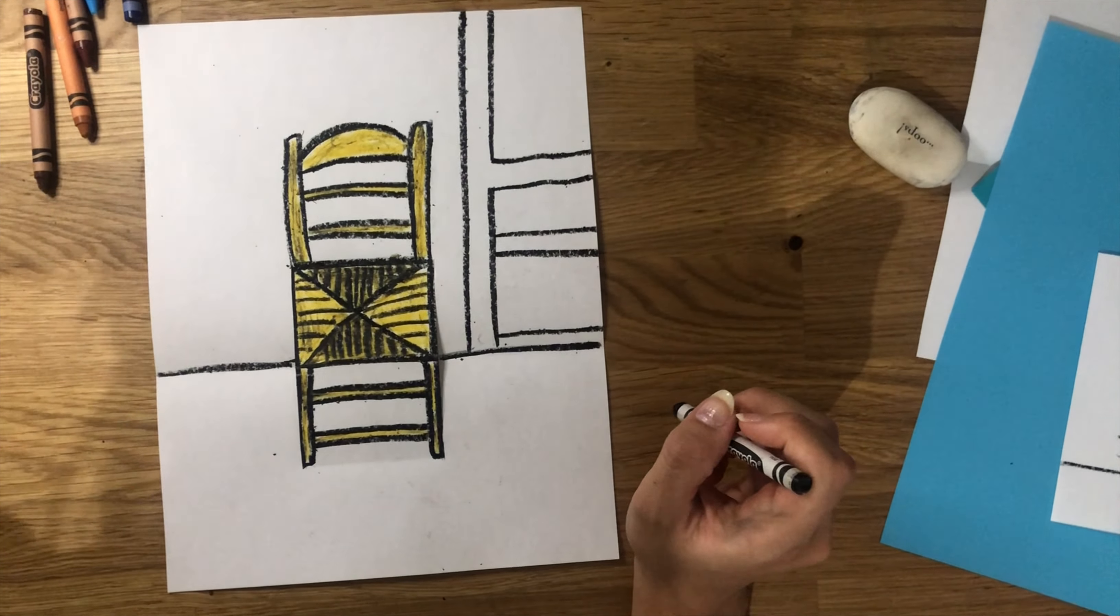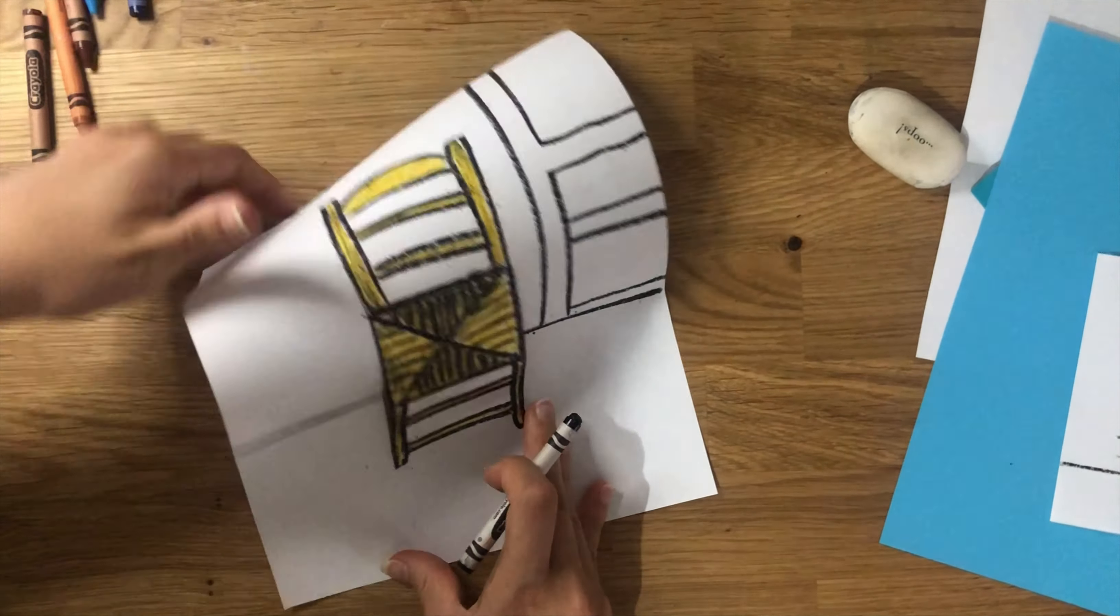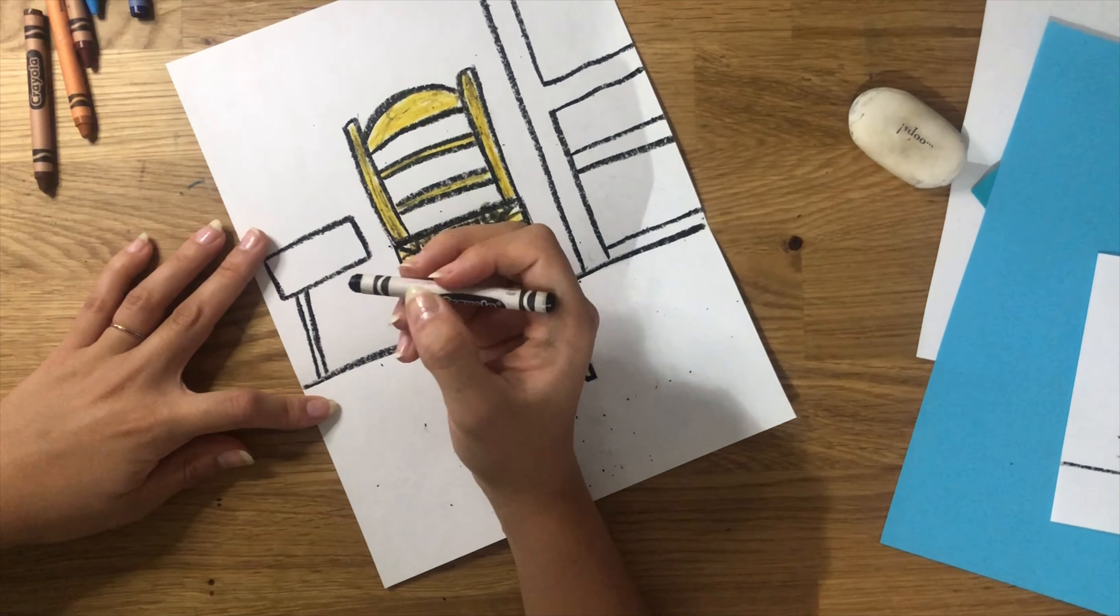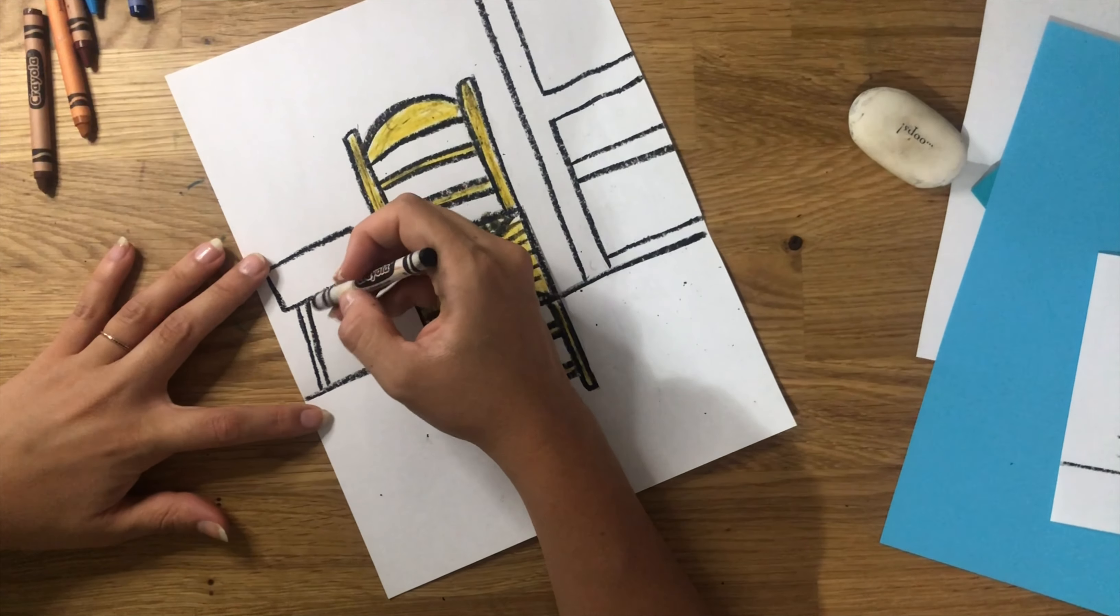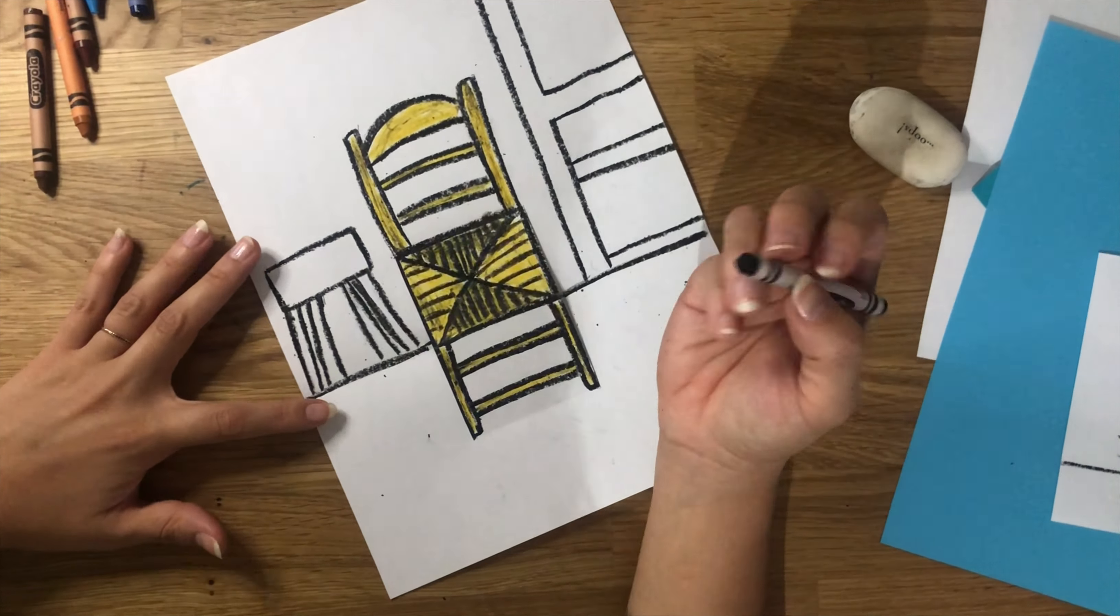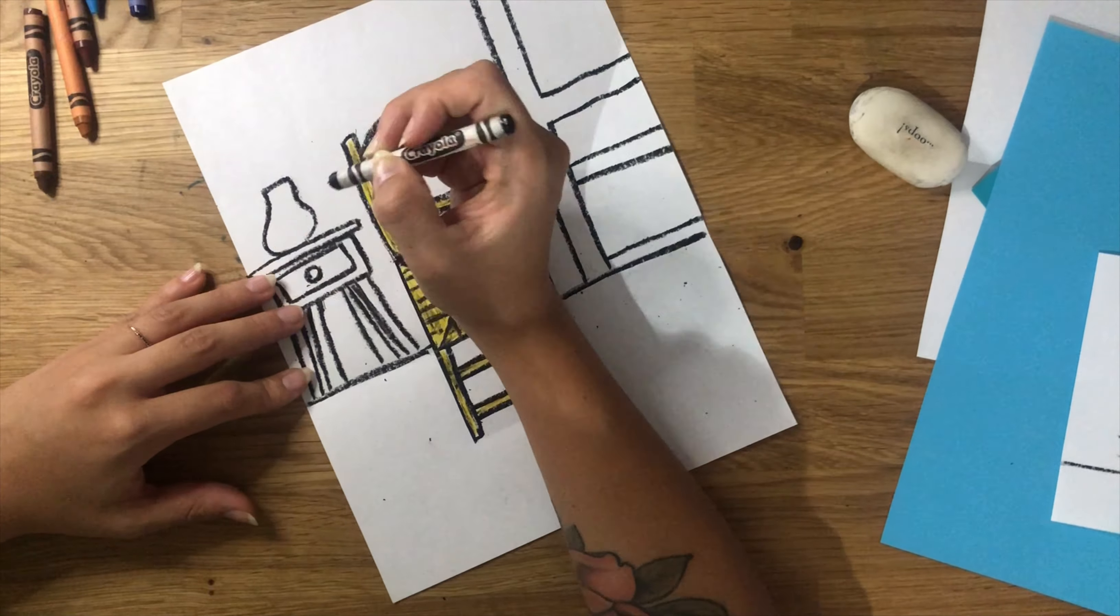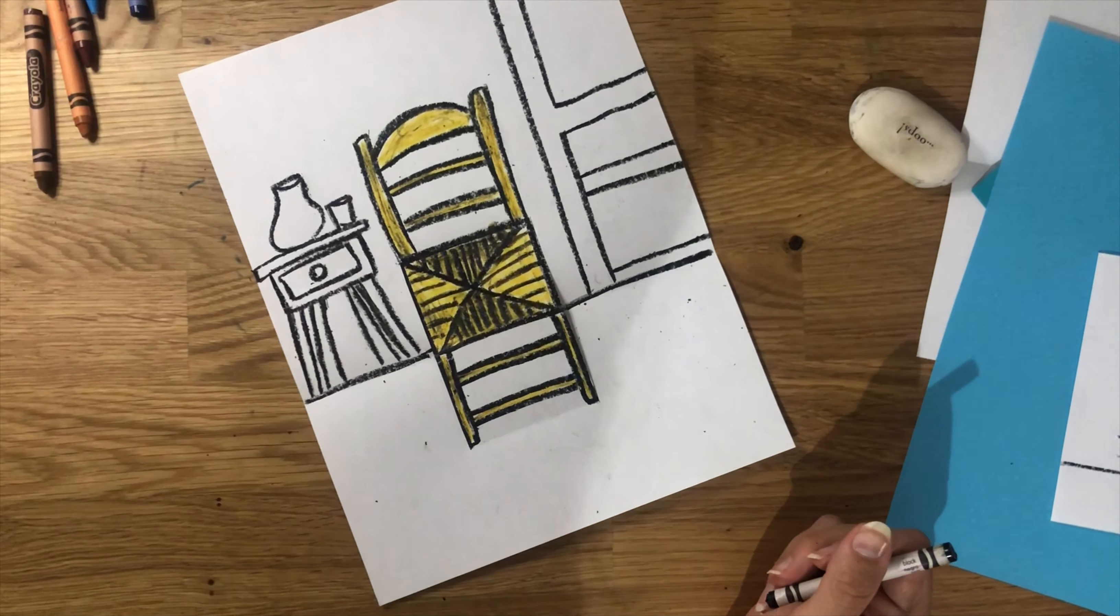On the left side of the chair, we're going to draw a nightstand. Draw a rectangle on the left side. Add a set of legs. Then add the legs that are behind. Then draw a very skinny and long horizontal rectangle for the top of the drawer. The drawer is a rectangle inside of a rectangle with a circle in the center. On top of the nightstand, draw a jar of water and a cup of water next to it.